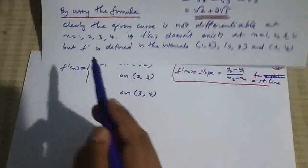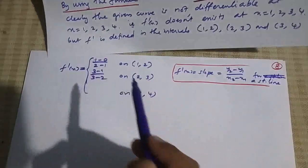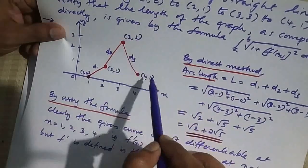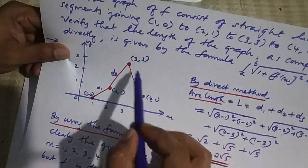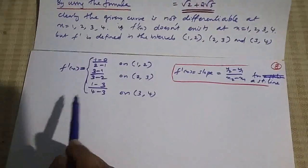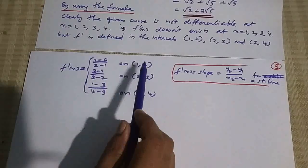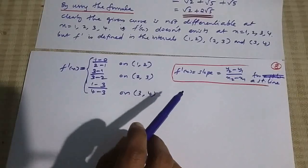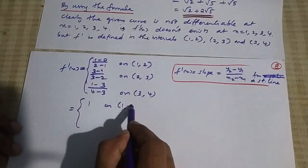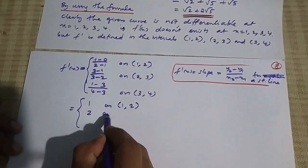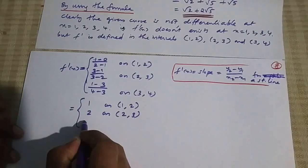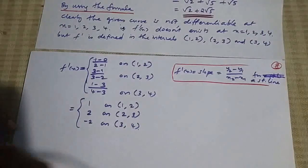On the interval (2,3), f'(x) = (3-1)/(3-2) = 2. On the interval (3,4), f'(x) = (1-3)/(4-3) = -2/1 = -2. So f'(x) equals 1 on (1,2), 2 on (2,3), and -2 on (3,4). The derivative does not exist at x = 1, 2, 3, 4 since f is not differentiable there.